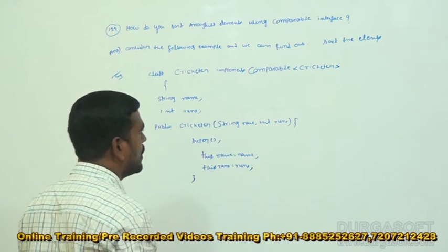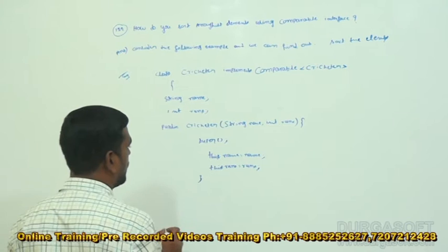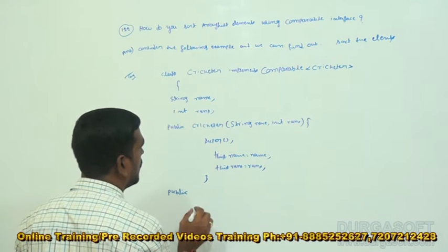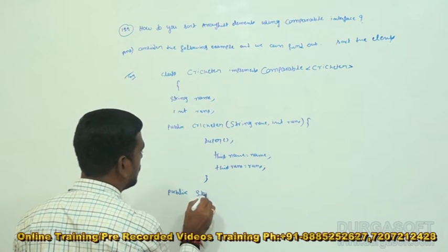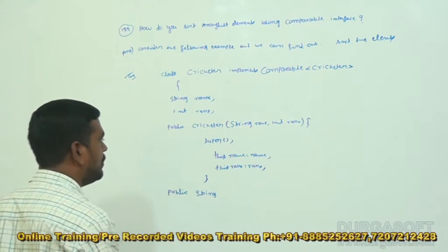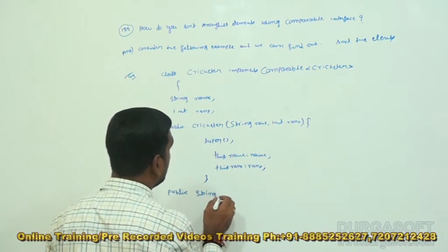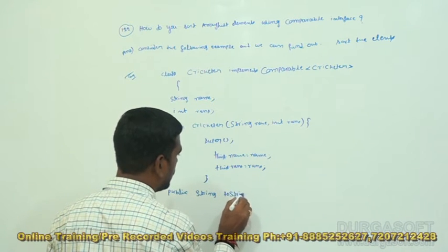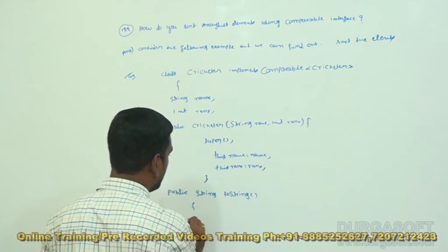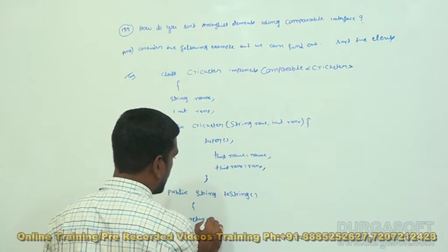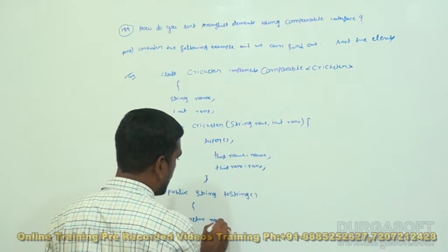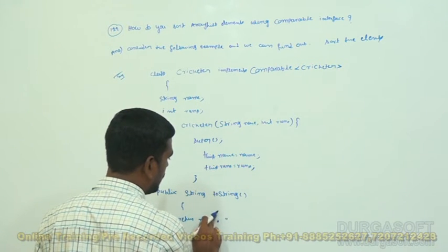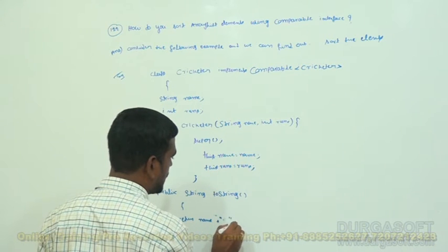After that, we need to override the toString method. Public String toString — return name plus runs.